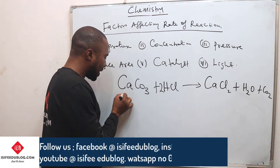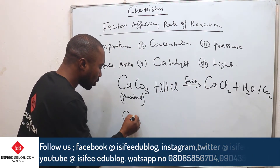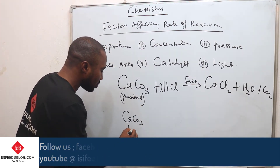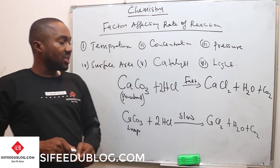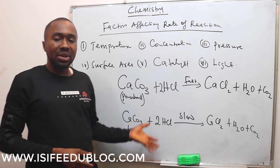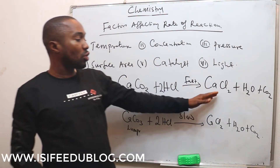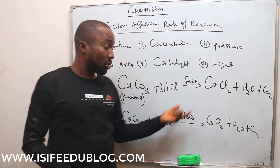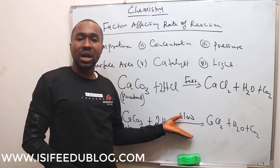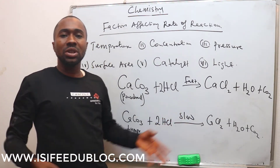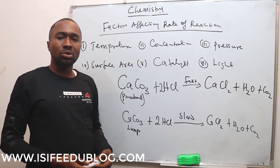When we have powdered limestone, the reaction will be very fast. But when we have the same reaction with limestone in lumps, the reaction will be slow. So surface area plays an important role in determining whether the reaction will be fast or slow. When the surface area is high, the rate of the reaction will be high — that means a fast reaction. But when the surface area is low, the rate of the reaction will go down — that is a slow reaction.